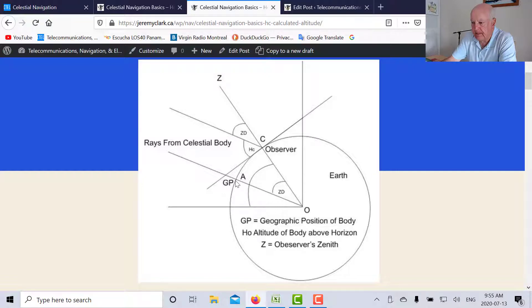Now GP is the geographic position. So the Sun is over here and rays of the Sun leave the Sun and strike the earth. So the GP is defined as the intersection between a line from the center of the Sun or the celestial body to the center of the earth. So where it intersects the surface of the earth is the geographic position.